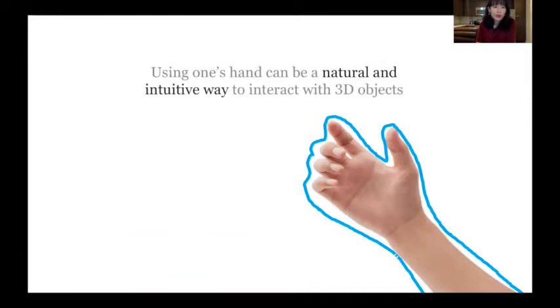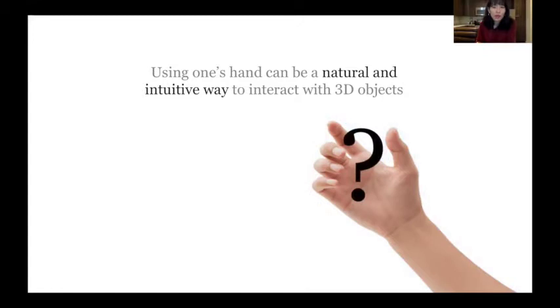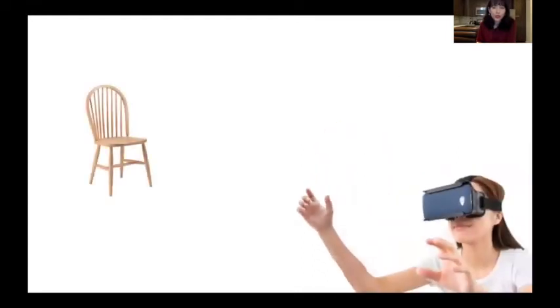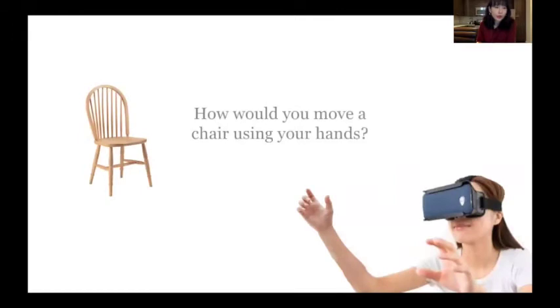And many people believe using one's hand can be a natural and intuitive way to interact with a 3D object. But the question remains here: what kind of hand gesture would be natural and intuitive? Imagine you are using your hand to move the chair that is far away from you. How would you move this chair using your hand? What kind of gesture do you think you are going to use?